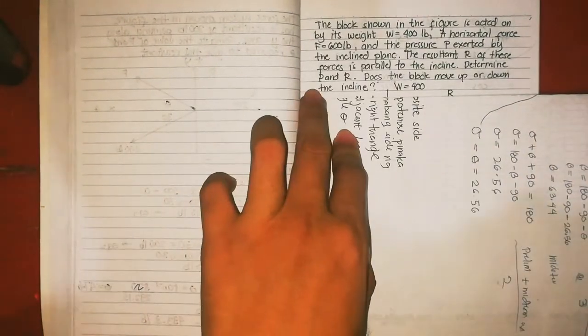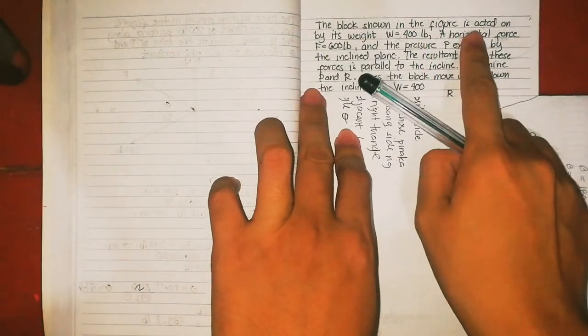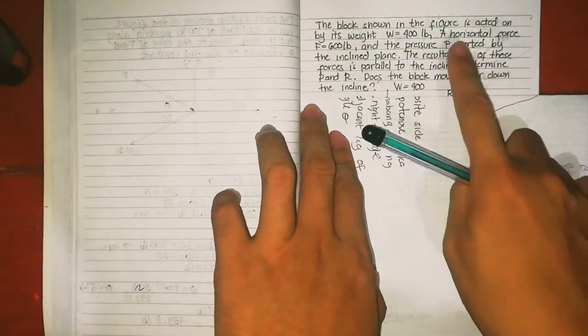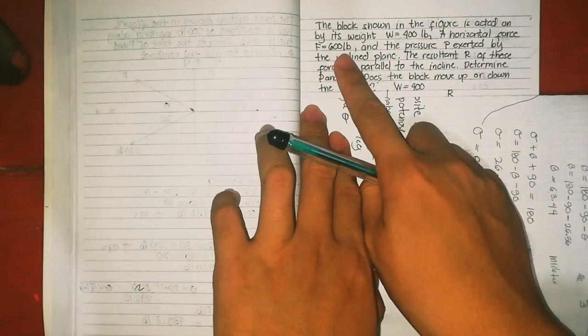Next problem. The block shown in the figure is acted on by its weight, 400 pounds, and a horizontal force F equal to 600 pounds.